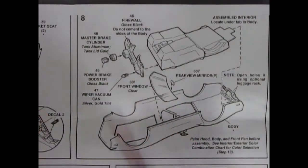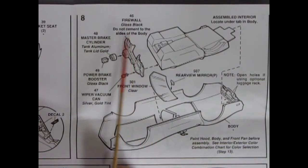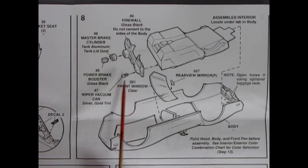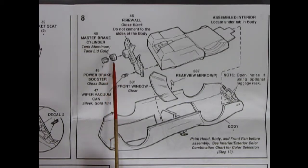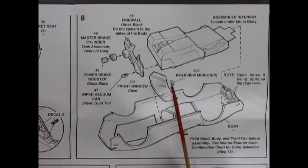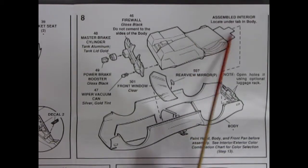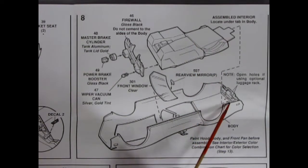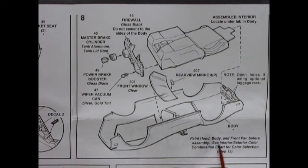And here we are with step 8. We've got our firewall which you paint gloss black. Do not cement to the sides of the body. Interesting. There we've got our wiper vacuum can, our power brake booster and our master brake cylinder all gluing together. We've got a separate piece of glass here with a rear view mirror that pops down into place. And then here we've got our interior with this nice tab on the back that locates in under here on our body. It says paint hood body front and front pan before assembly. See interior exterior color combination chart for color selection in step 13.